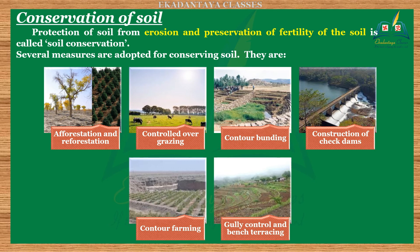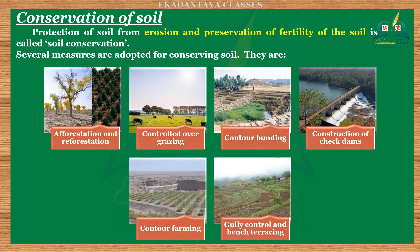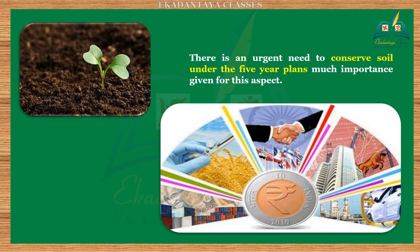Conservation of soil: the protection of soil from erosion and the preservation of the fertility of the soil is called soil conservation. Several measures are adopted for conserving soil — one, afforestation and reforestation; two, controlled overgrazing; three, contour farming; four, construction of check dams; five, contour bunding; six, gully control and bench terracing. There is an urgent need to conserve soil, and under the five-year plans much importance has been given to this aspect.